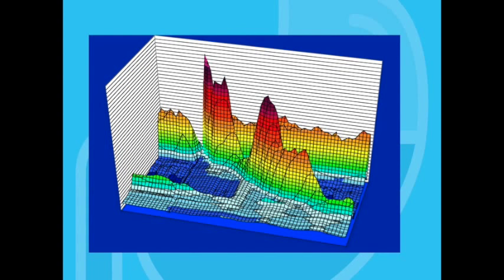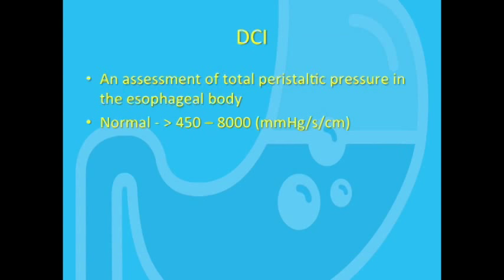you see the pressures of the esophagus looking like a mountain range. The DCI is simply an integration of all those pressures, basically calculating the volume of that mountain range, and so larger volumes indicate higher overall esophageal pressures.